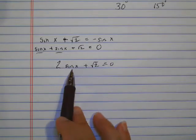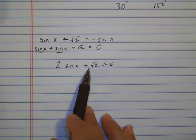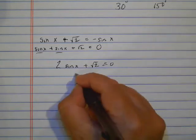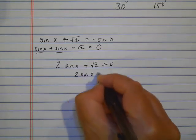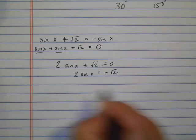Now that I have just one trig function, just the sine x here, I'm ready to start solving. So I'm going to move the square root of 2 to the other side and divide both sides by 2.